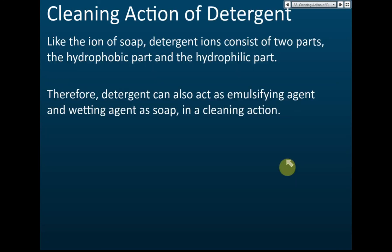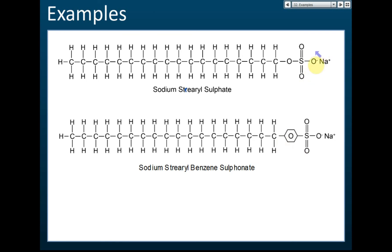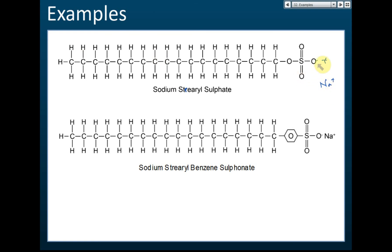The cleaning action of detergents is similar to soap. Like the soap ion, the detergent ion also consists of two parts: the hydrophobic and the hydrophilic part. Therefore detergents can act as emulsifying agents and wetting agents, just like soap. When this detergent salt dissolves in water, it ionizes — the sodium ion separates from the large organic molecule.